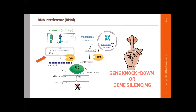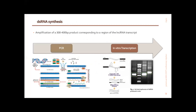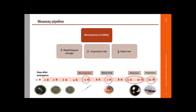The next step was to silence them using a knockdown approach based on the RNAi mechanism. We produced double-stranded RNA against each gene in vitro, and then we administered them to adult female insects through microinjection.